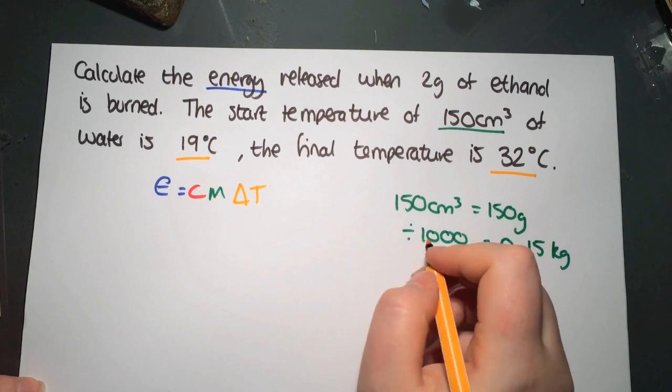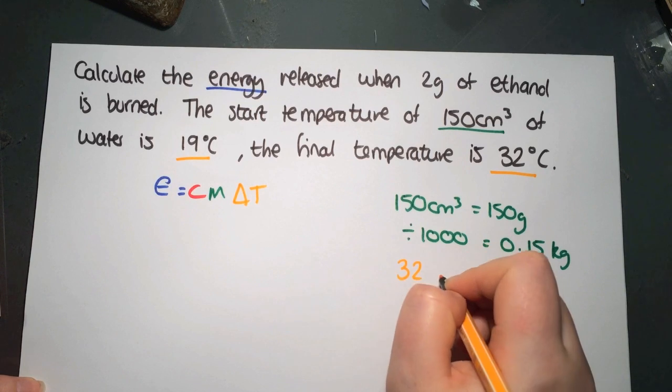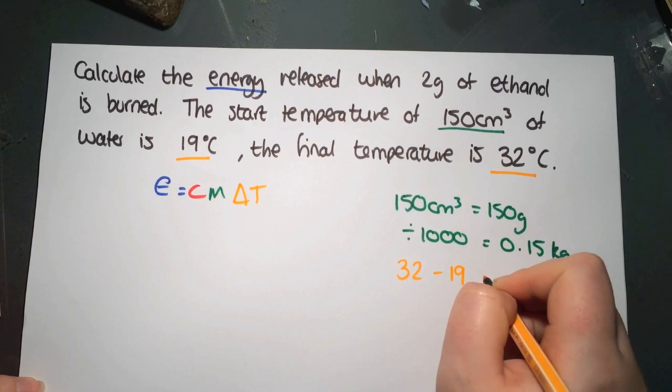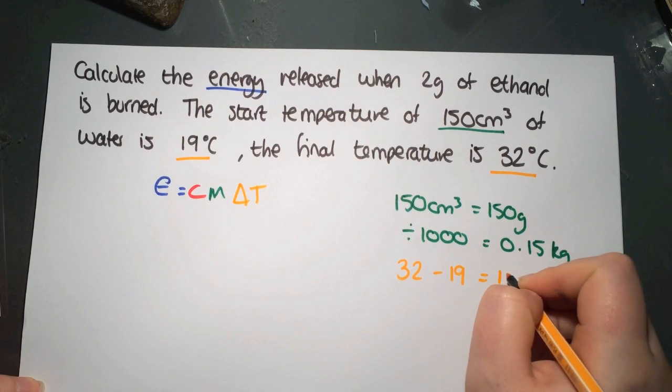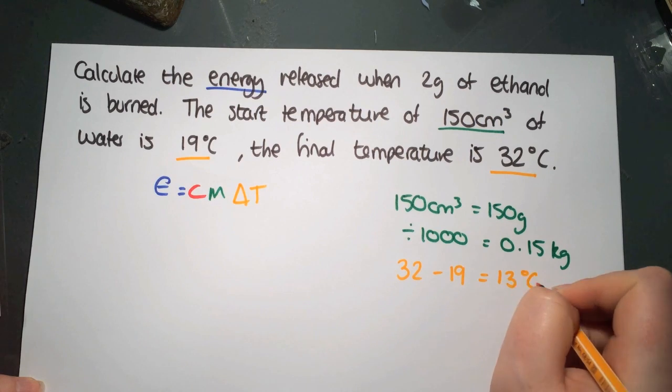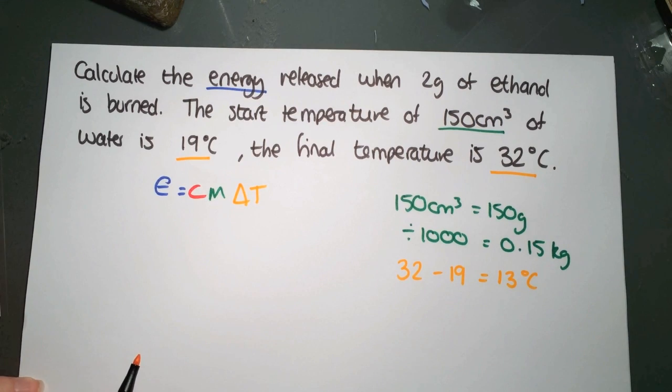We also need to work out our delta T. So our final temperature is 32. Our start temperature is 19. That gives us a delta T of 13 degrees that we can use in our reaction.